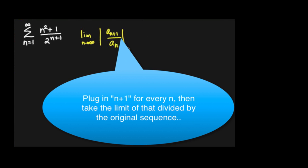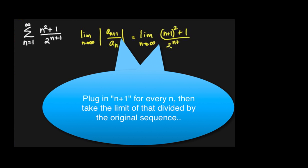And then if I plug in a(n+1) everywhere I see an n: (n+1)² + 1 over 2^(n+1) + 1.